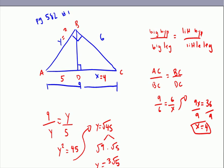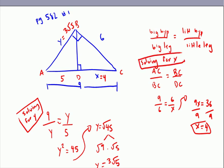So y equals 3 radical 5. And just in case you were at all confused, this is solving for y. This is solving for x. Okay, done. Does that make sense to everybody, what just happened there? That was easy, right?